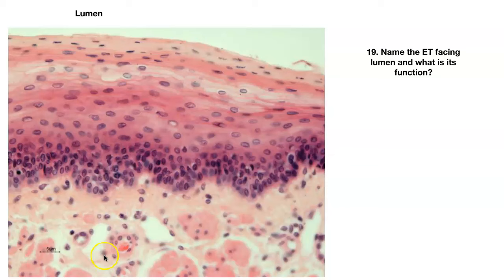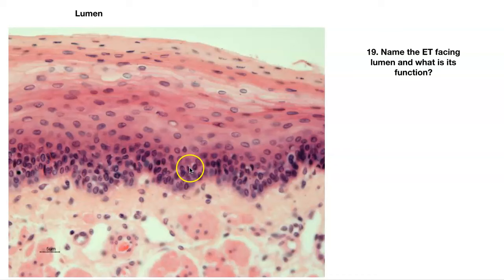Number nineteen — here we have another stratified squamous. Cells are alive up here: non-keratinized. The more strata — the more layers of cells — the more protection you're going to have. So if it's stratified, its function is going to be protection.